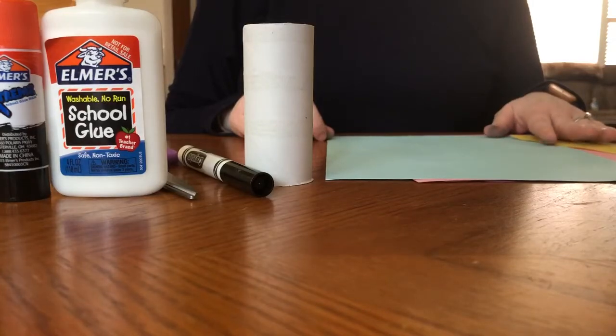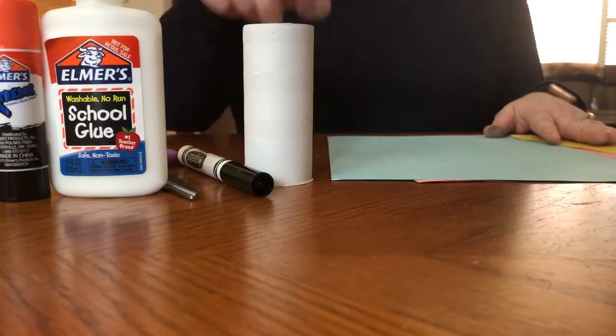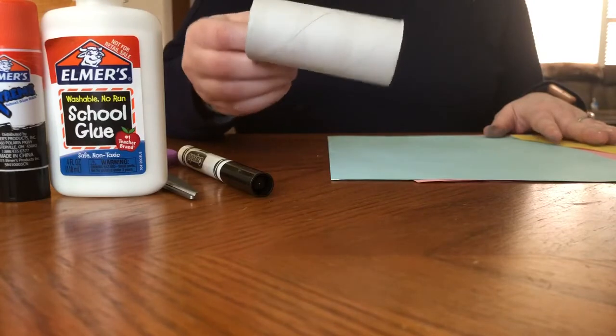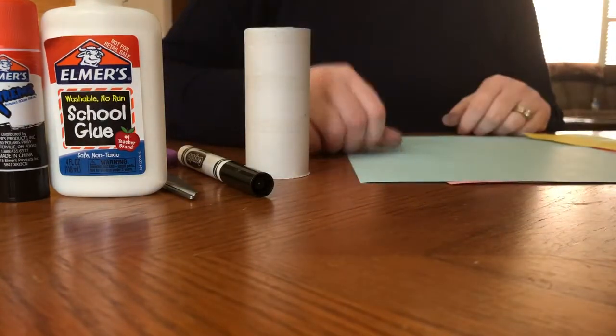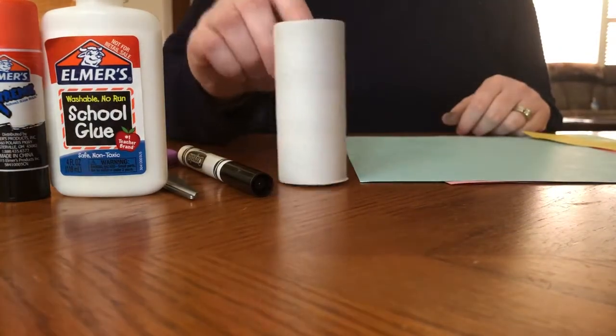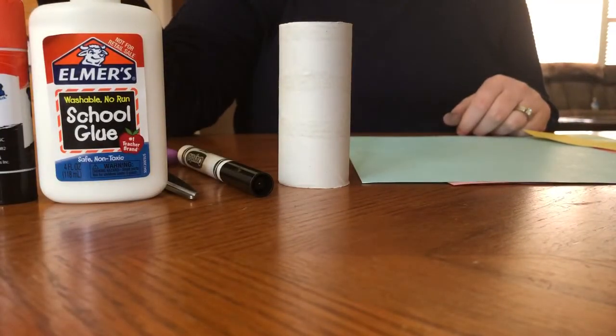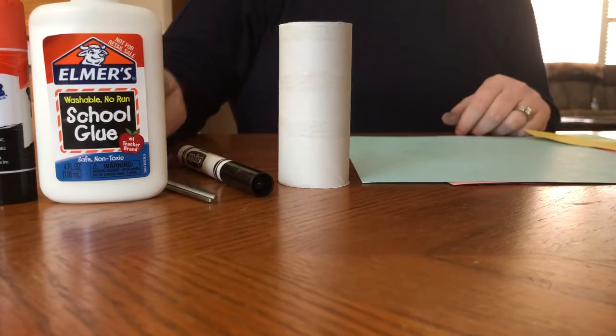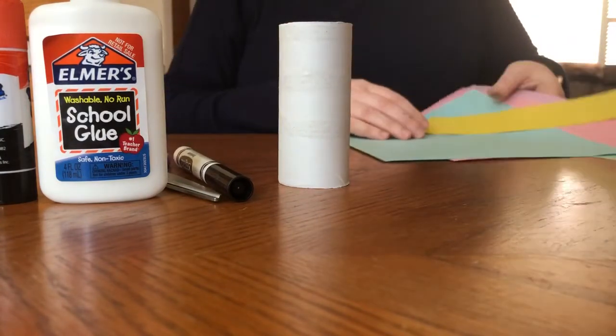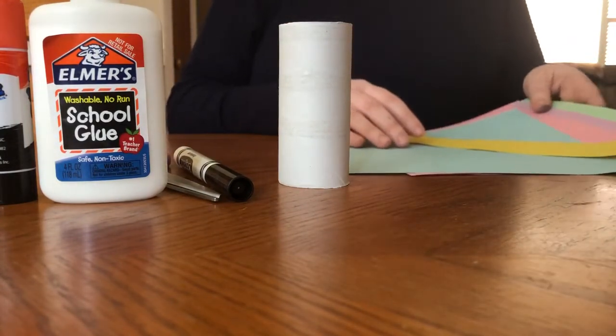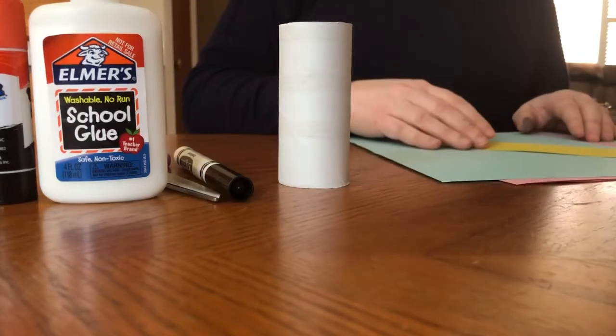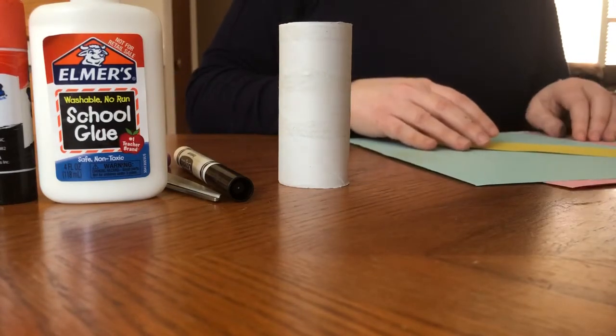Hi friends, today we are going to make a toilet paper roll butterfly. So what you need to get started is a toilet paper roll, glue, glue stick, tape if that's what you have, scissors, black marker, and some colored paper. If you don't have colored paper, don't worry, you can just use white paper and color it yourself with crayons or markers.